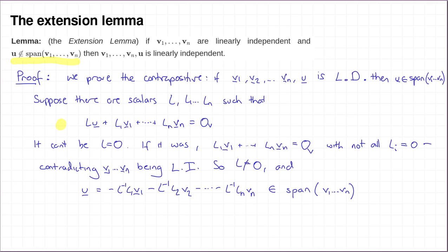That means we've proved that if V1, V2 up to Vn followed by u was linearly dependent, then u was in the span of the Vs, completing the proof of our result. So that's called the extension lemma.